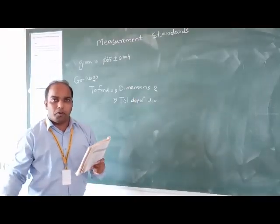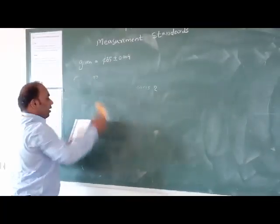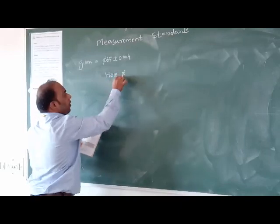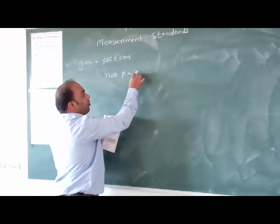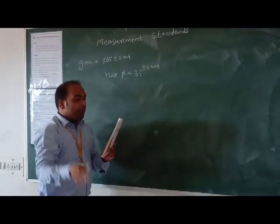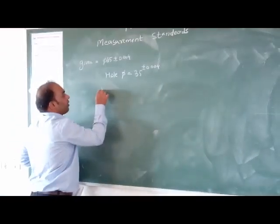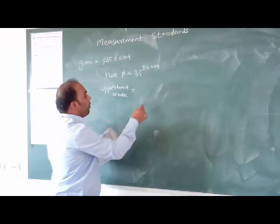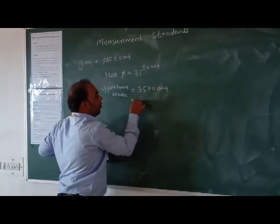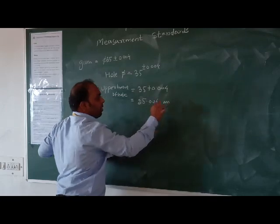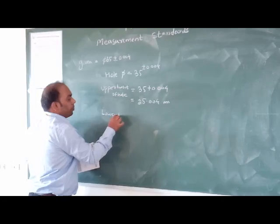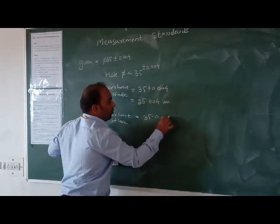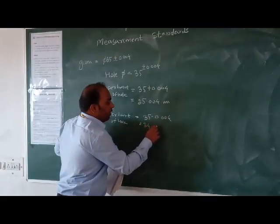The hole is having diameter 35mm. Upper limit of the hole is 35 plus 0.004 equals 35.004mm. Lower limit of the hole is 35 minus 0.004, which gives us 34.996mm.